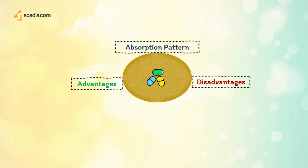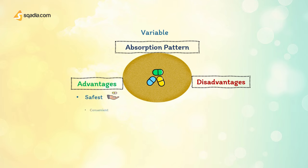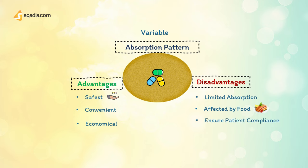Oral drugs have variable absorption patterns and are affected by many factors. Advantages are that it is safe to use, convenient, and an economical route of administration. Disadvantages include limited absorption of some drugs, food may affect absorption, patient compliance is necessary, and drugs may be metabolized before systemic absorption.